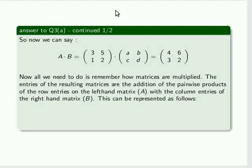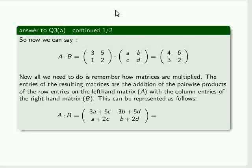This can be represented as follows: A by B equals (3a + 5c, 3b + 5d, a + 2c, b + 2d). And as before, I repeat here, we're given the result which is (4, 6, 3, 2).